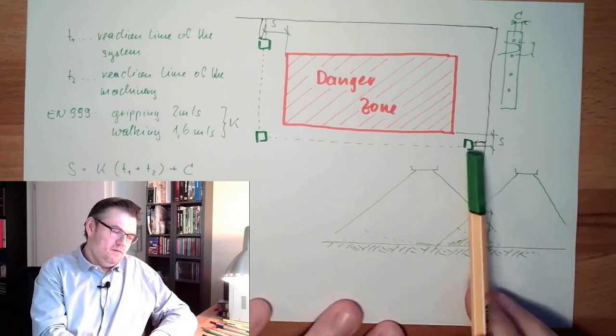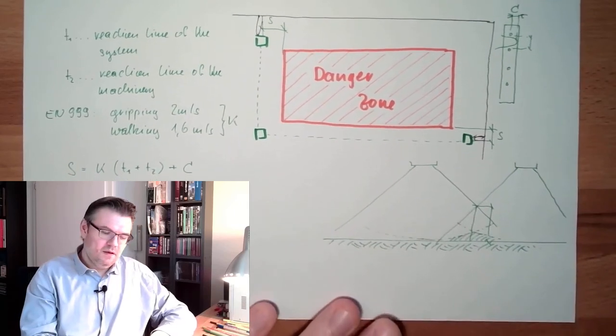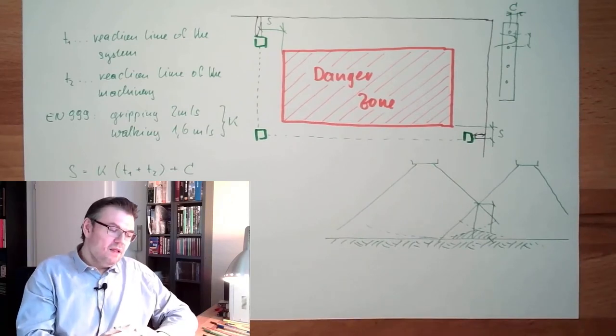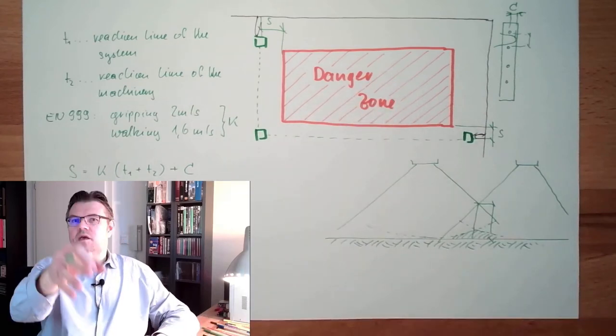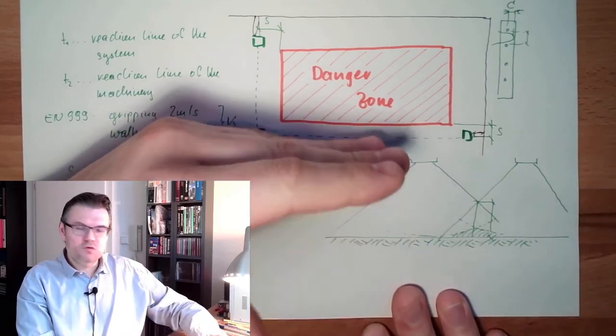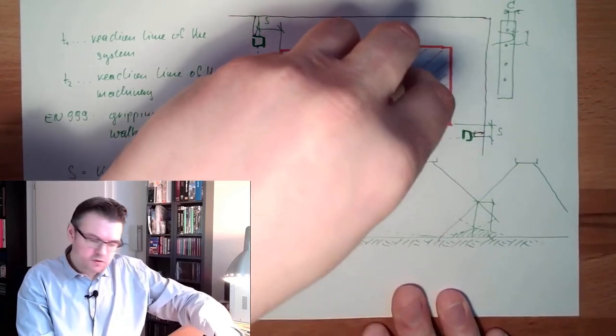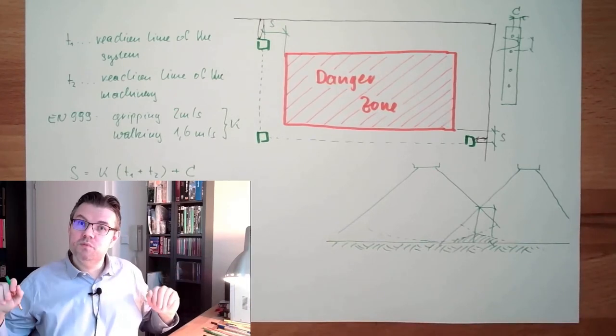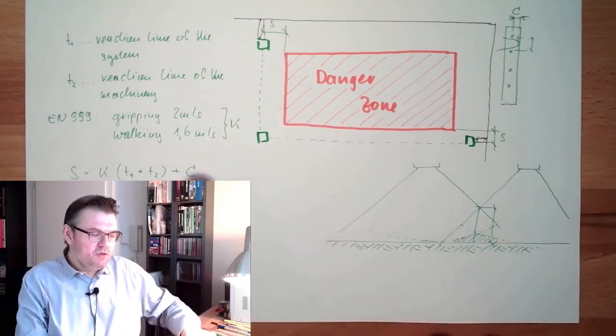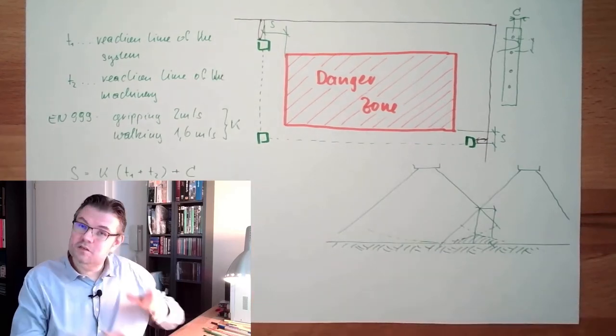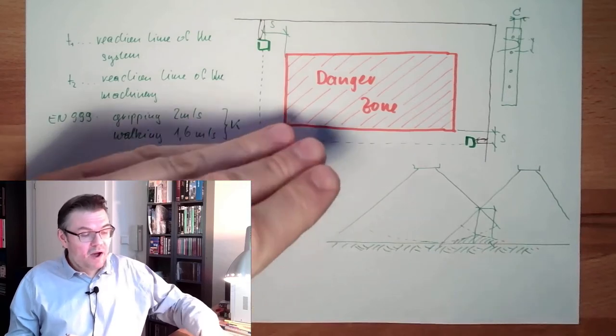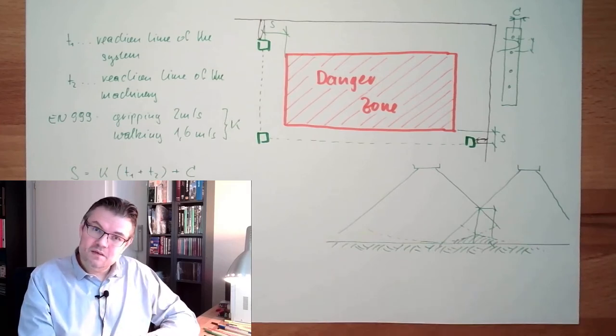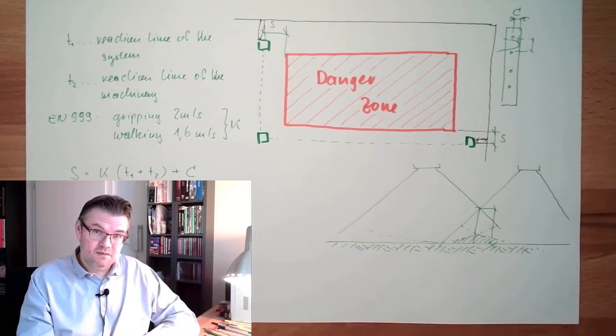Also, if the security device was triggered, we really have to make some acknowledge button or something like this, reset button, that we cannot just, because it's no longer triggered, start again to work. Because then somebody would be able to walk through. Then it's triggered. Then he's in the danger zone. And because the safety curtain now is functioning again, it automatically starts. This would be dangerous, right? So there must be somewhere a reset button. And this reset button is outside the danger zone, of course. So I can only press the reset button by not being in the danger zone. So this is for restarting the process. No automatic restart. Important.